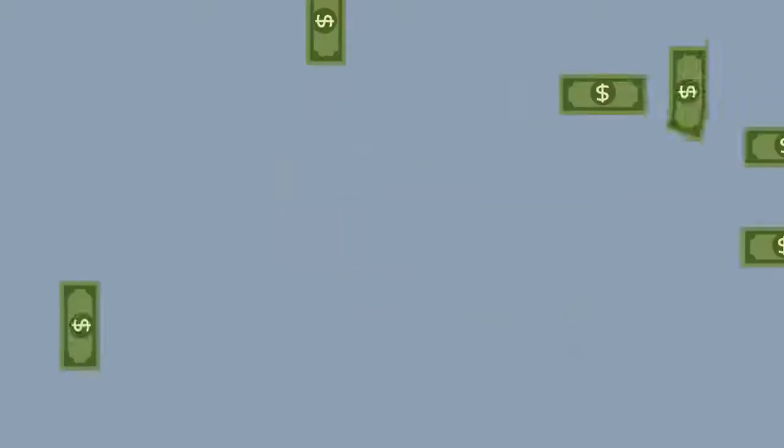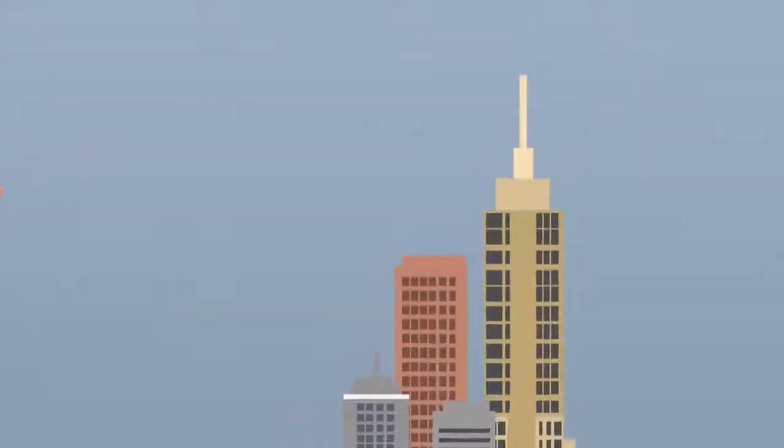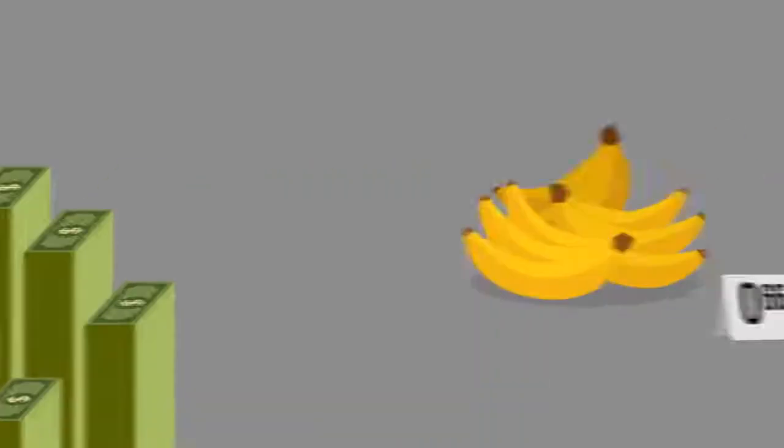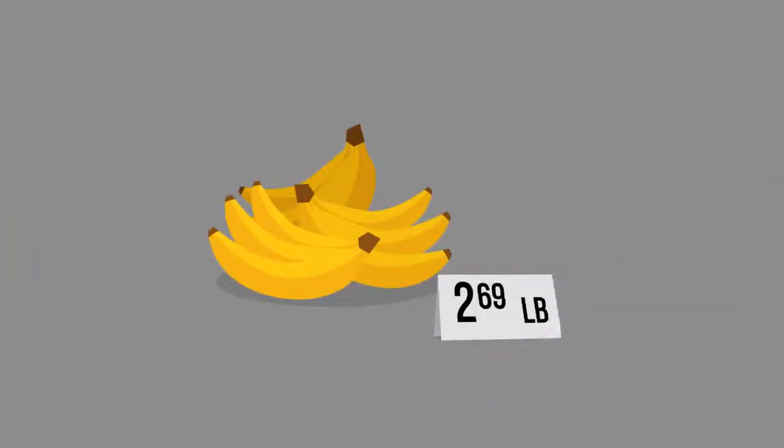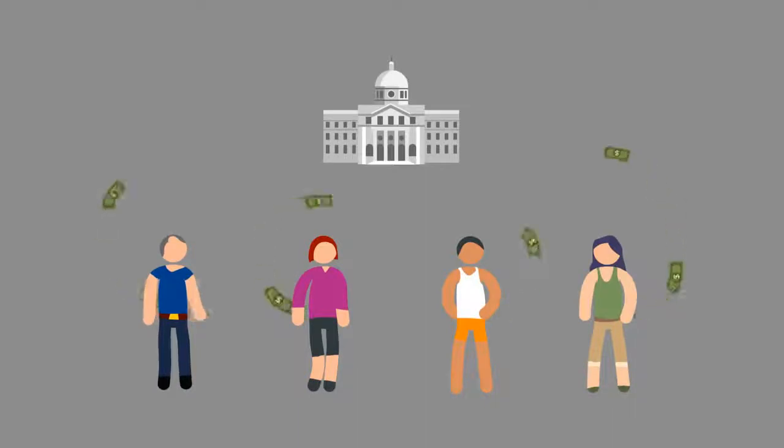Fiat currencies are very easy to transport and circulate, so it helped to boost human civilization into a fast developing era. However, it has a fatal characteristic. Unlike the physically limited precious metal, it can easily be printed by the government and therefore causing inflation. Then the price goes up and wealth flows from the people to the government.